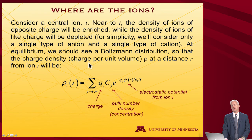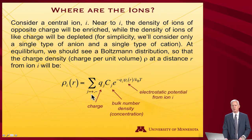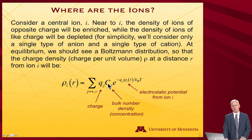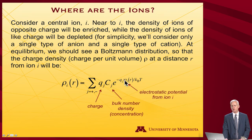If we ask about the charge density — charge per unit volume, denoted rho — at a given distance R from ion I, we sum over cations and anions. The charge density depends on the charge, the bulk number density, and a Boltzmann weighting factor e to the minus energy over kT. The energy is the charge interacting with the electrostatic potential from the central ion.